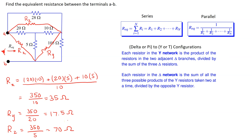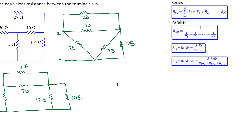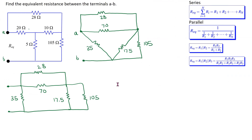Thus the first step is complete — finding the values of the resistors and applying the Y-to-delta transformation. We can use this transformation to help simplify the circuit. This is the original circuit, and when we replace this Y or T configuration of resistors with a delta configuration, the circuit becomes equal to this one.